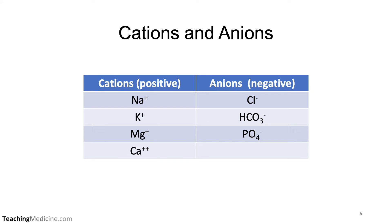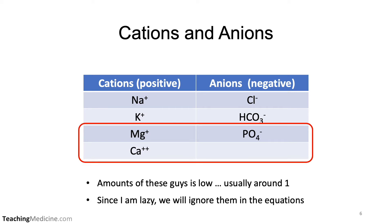The cations we are measuring include sodium, potassium, magnesium, and calcium. The anions that we measure are chloride, bicarb, and phosphate. We choose these ones to measure because they are present in the largest quantities. We tend to ignore magnesium, calcium, and phosphate because the values for these ions are usually around 1, so we're just going to ignore them in the equations.